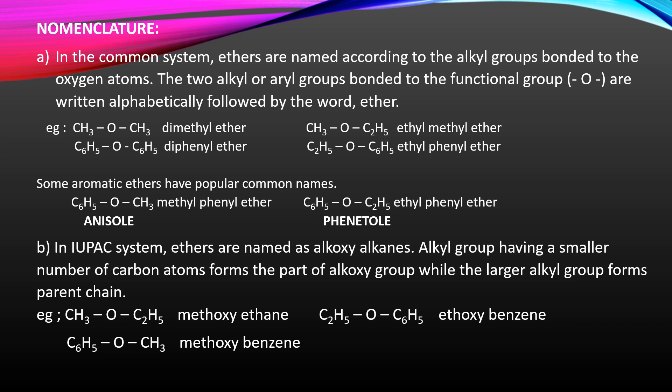Next, nomenclature of ethers — how do we name ethers? In the common system, ethers are named according to the alkyl groups attached to the oxygen atom. The two alkyl or aryl groups attached to the oxygen atom are written alphabetically, followed by the word 'ether.' For example, CH3OCH3 — both are methyl groups, so we write dimethyl ether. C6H5OC6H5 — both are phenyl groups, hence diphenyl ether.